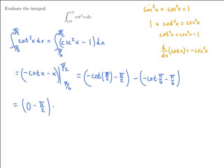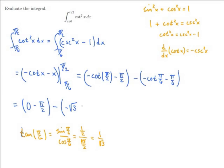Now what's cotangent of pi over 6? Tangent of pi over 6 is sine of pi over 6 over cosine of pi over 6, which is 1/2 over root 3 over 2, so that's 1 over root 3. Cotangent is the reciprocal, so cotangent of pi over 6 is root 3. So we have negative cotangent, which gives negative root 3, then minus pi over 6.